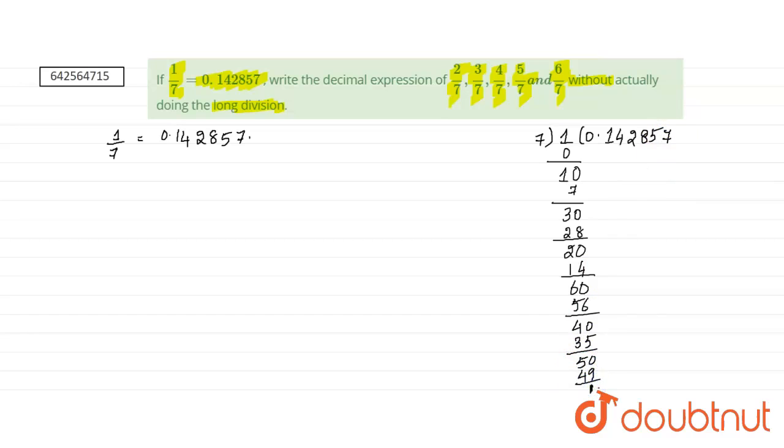7 sevens are 49, then 1 is the remainder, from 1 again this entire process repeats. So, this goes on like this until infinity. Now, we have the value of 1 divided by 7.